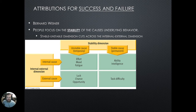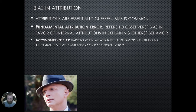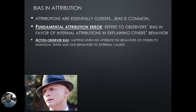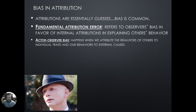Now, with attribution theory there are some biases, especially depending on whether you are an actor or an observer. An attribution is essentially a guess, and because it's a guess it's prone to bias. The fundamental attribution error is a famous observer bias where you explain someone else's behavior through an internal attribution — blaming the cause of their behavior on a personality trait or disposition — rather than considering a situational cause.